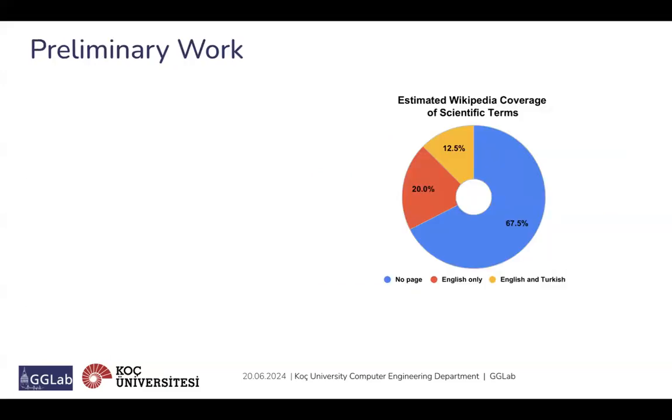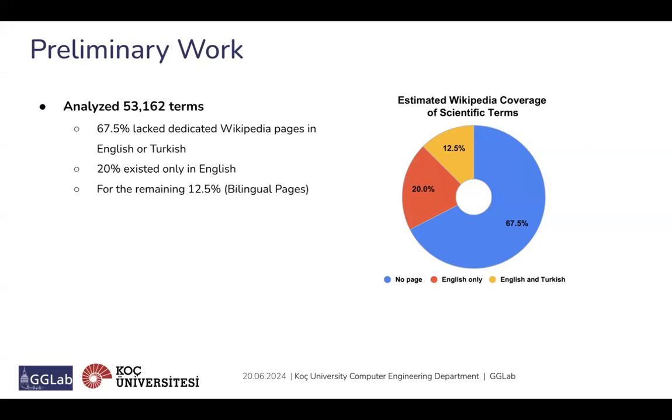In our preliminary work, we analyzed a total of 53,162 terms. We found that 67.5% of these terms lacked dedicated Wikipedia pages in both English and Turkish. Additionally, 20% of the terms existed only in English. For the remaining 12.5% which had bilingual pages, there was a mismatch in 1,063 out of 2,927 terms when compared with expert-created definitions.